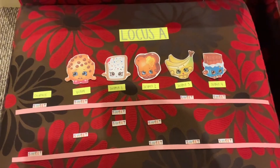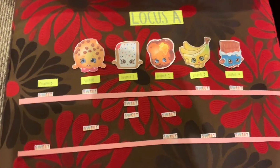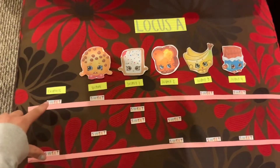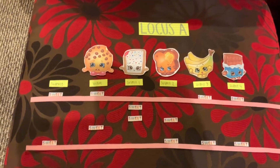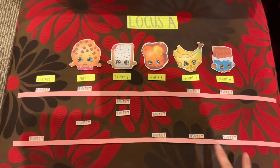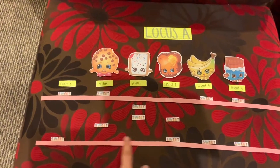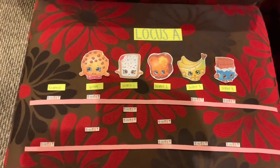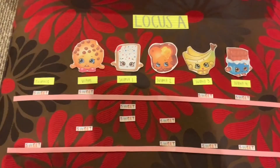Looking at the evidence at locus A, we can see that the two alleles are here and here. The suspect must match exactly to both of these bands to not be excluded from leaving the evidence. Looking across the entire gel, we can see that only two other suspects match exactly. Therefore, the victim, suspect 1, and suspect 2 are excluded from leaving the evidence, because none of these three individuals' alleles match exactly with the alleles present in the evidence.